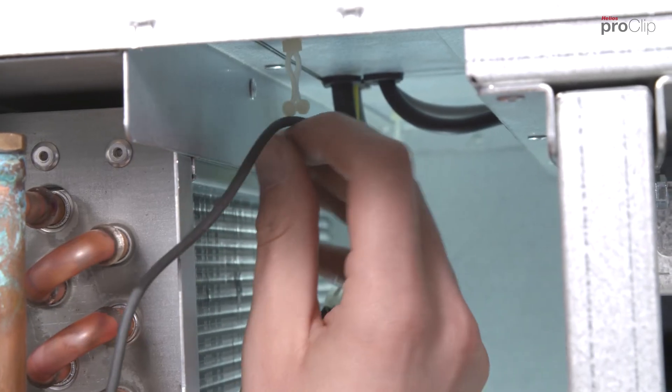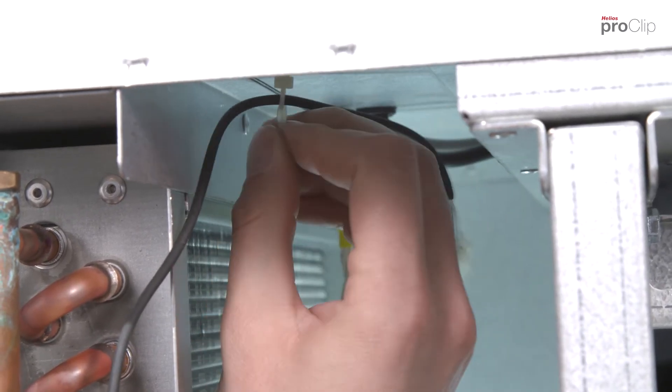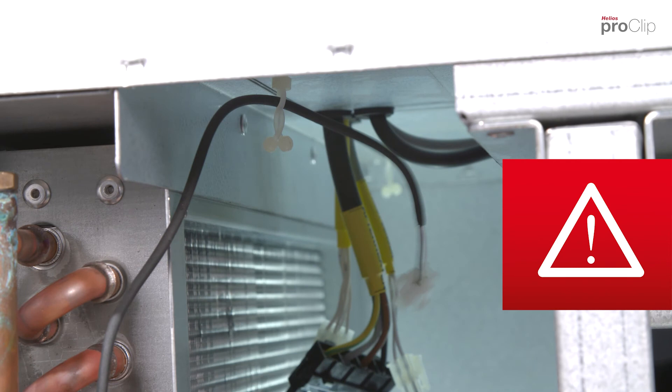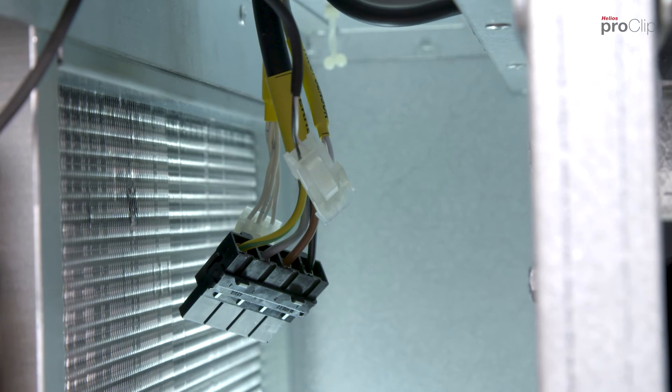The next step is to secure the temperature sensor cable with the provided plastic holders in the unit. Ensure that the cable is not under tension. Connect the temperature sensor connector to the prepared socket.